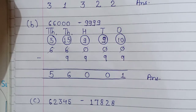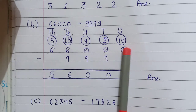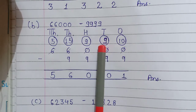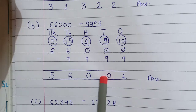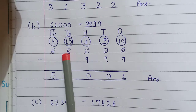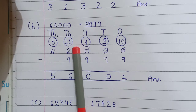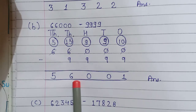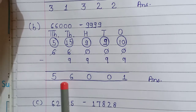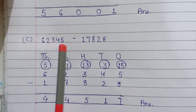0 minus 9 is not possible. So take 1 carry — this 0 becomes 10. 10 minus 9 equals 1. Now this 0 has become 9, so 9 minus 9 equals 0. Again this 0 becomes 9, so 9 minus 9 equals 0. Then this 6 becomes 5, and 5 minus 9 is not possible, so take carry from the next 6. It becomes 15; 15 minus 9 equals 6. And this 6 becomes now 5, so 5 equals 5. The answer is 56,001.